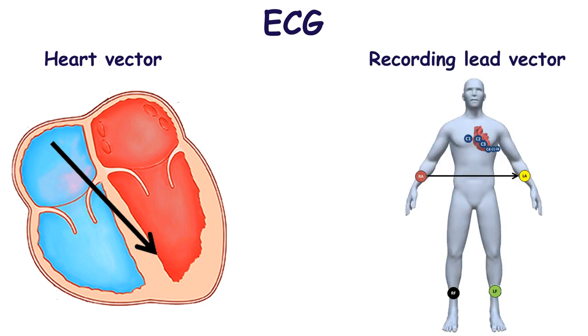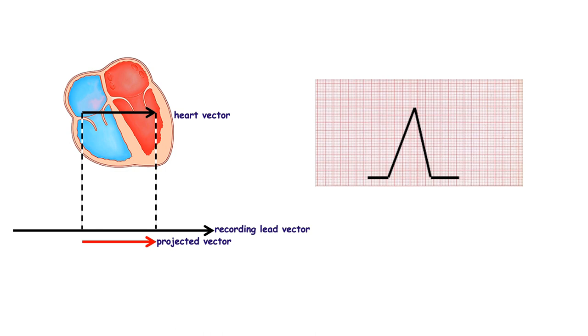If the heart vector runs parallel, in other words, the heart vector is of the same direction as recording lead vector, we see deflection strongly upward from baseline in this lead. In other words, there is positive deflection.